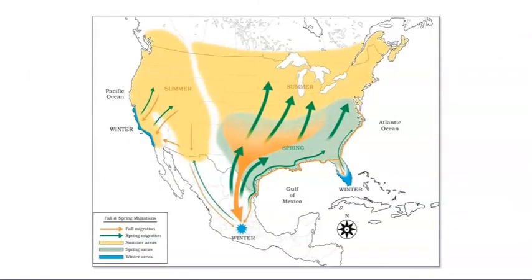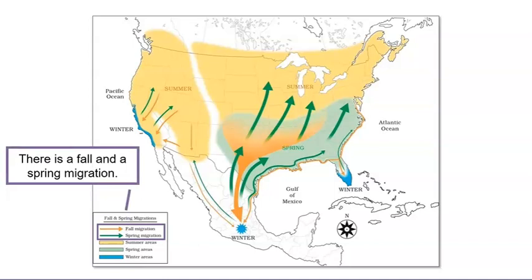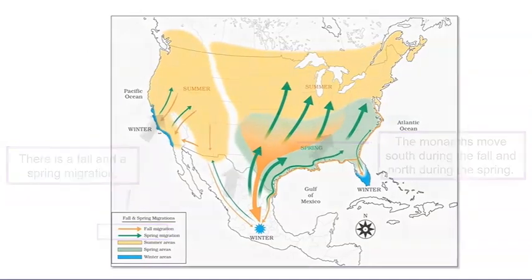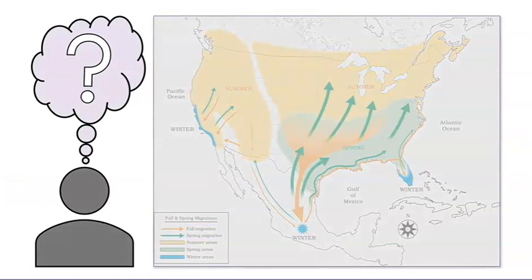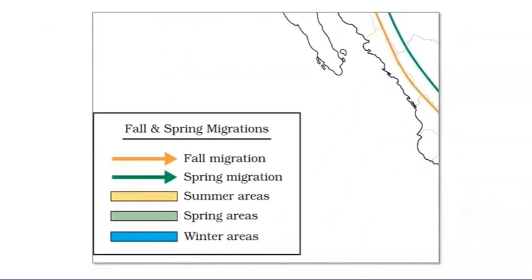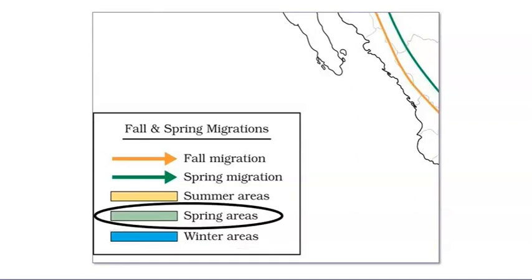What do you notice about this map? Let's look at the key. I noticed that there is a fall and a spring migration. I also noticed that the monarchs move south during the fall and north during the spring. I wonder what the colors mean. The blue shows where monarchs live in the winter. The green shows where monarchs live in the spring. And the yellow shows where monarchs can be found in the summer.